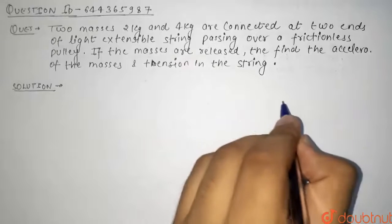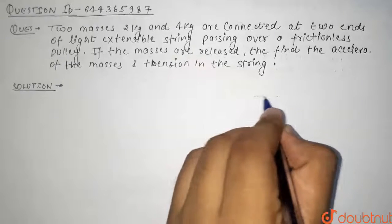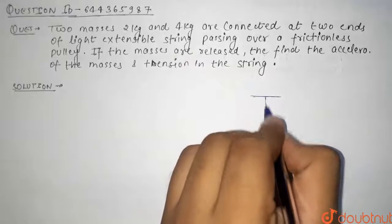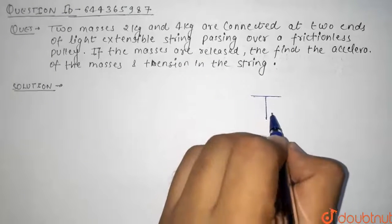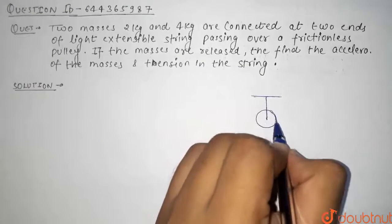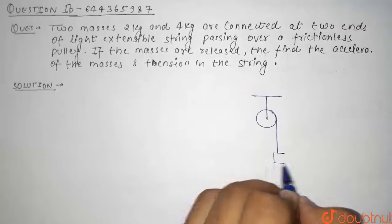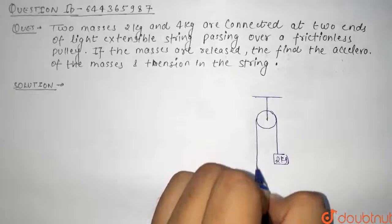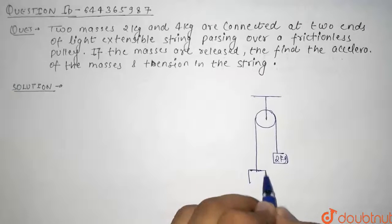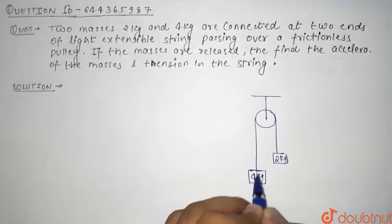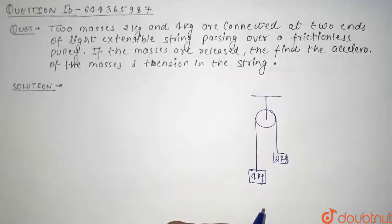So guys see here in this question we have been given two masses which are attached to a pulley. So let's see, here this is our pulley and two masses 2 kg - this is our 2 kg and this is our 4 kg attached to it. This is our string. Now we have to find what is the acceleration and what is the tension in this string.